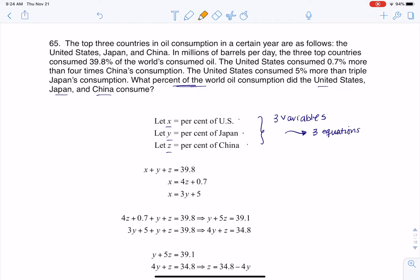So let me get my highlighter up, and let's look at the first number that pops up. I see this 39.8%. And it says the top three countries consume 39.8% of the oil. And if this is the percent for U.S., percent for Japan, percent for China, then I know that those three need to total out to 39.8%. So that's where my first equation is coming from.